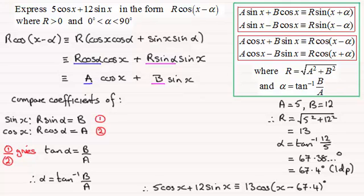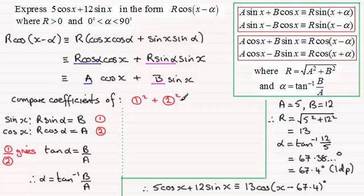Now next we need to get R. To do that, we'll first of all give ourselves some space by just sectioning this off here. What we do is we do equation 1 squared plus equation 2 squared. So 1 squared plus equation 2 squared gives us R squared sine squared α plus R squared cos squared α. If I pull out R squared as a common factor, then we'll have R squared bracket sine squared α plus cosine squared α, and that's going to be equal to B squared plus A squared.